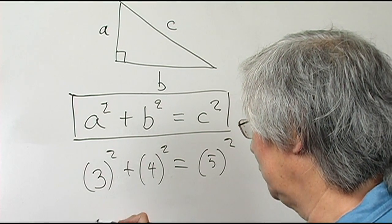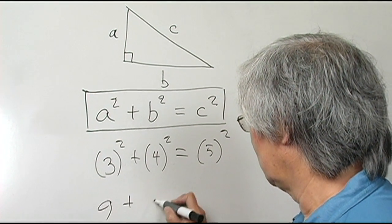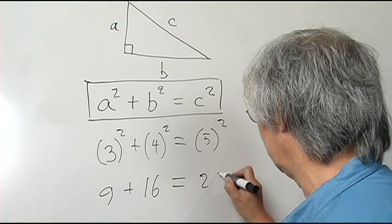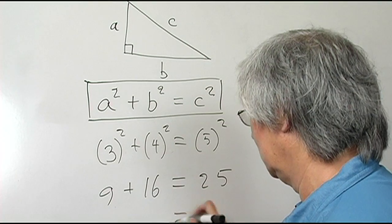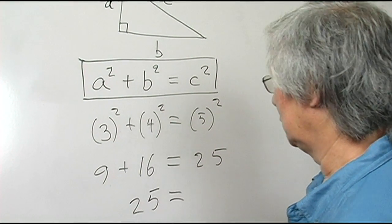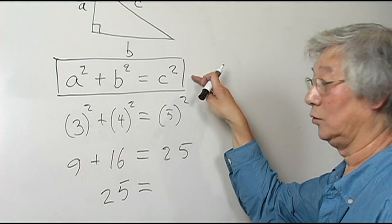3 times 3 is 9. 4 times 4 is 16. 5 times 5 is 25. 9 plus 16 is 25. So this illustrates the Pythagorean theorem.